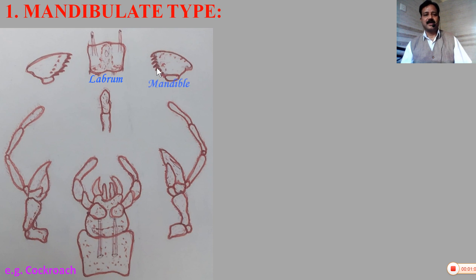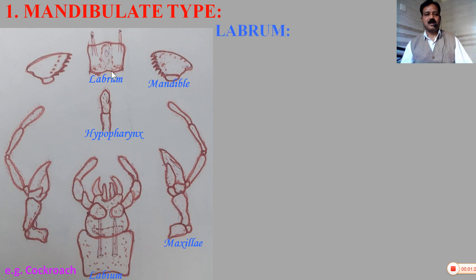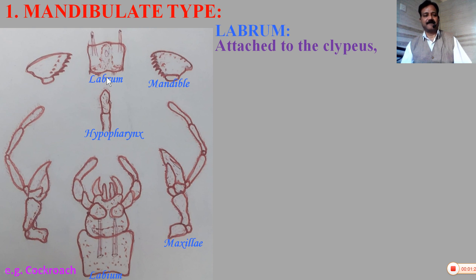The parts are: labrum, mandible, maxilla, labium, hypopharynx, and epipharynx. Labrum is also called the upper lip, and consists of the clypeus at its surface. Clypeus consists of a sensory structure called a gustatory structure, which helps in tasting the food material.